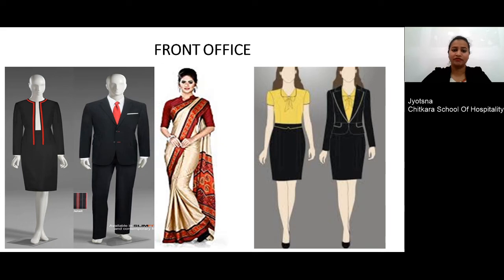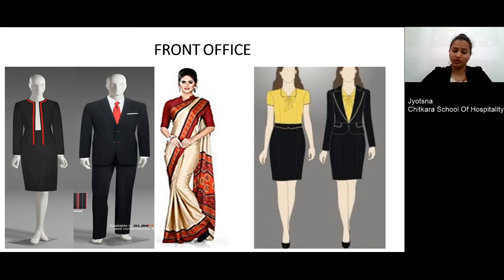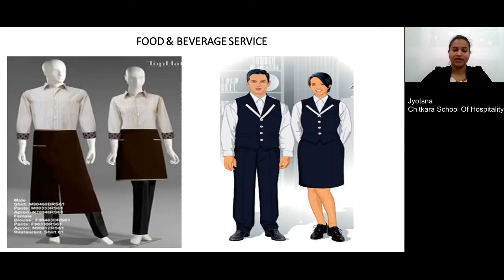The next department is the front office, which is the face of the hotel and comes in contact with guests most of the time. The uniform designed for this staff has to be eye-appealing. Options include a traditional sari for the receptionist, or a blazer with shirt and trouser, or a knee-length skirt. For males, a blazer along with a shirt, trouser, and a tie or pocket scarf can be given, along with comfortable shoes.